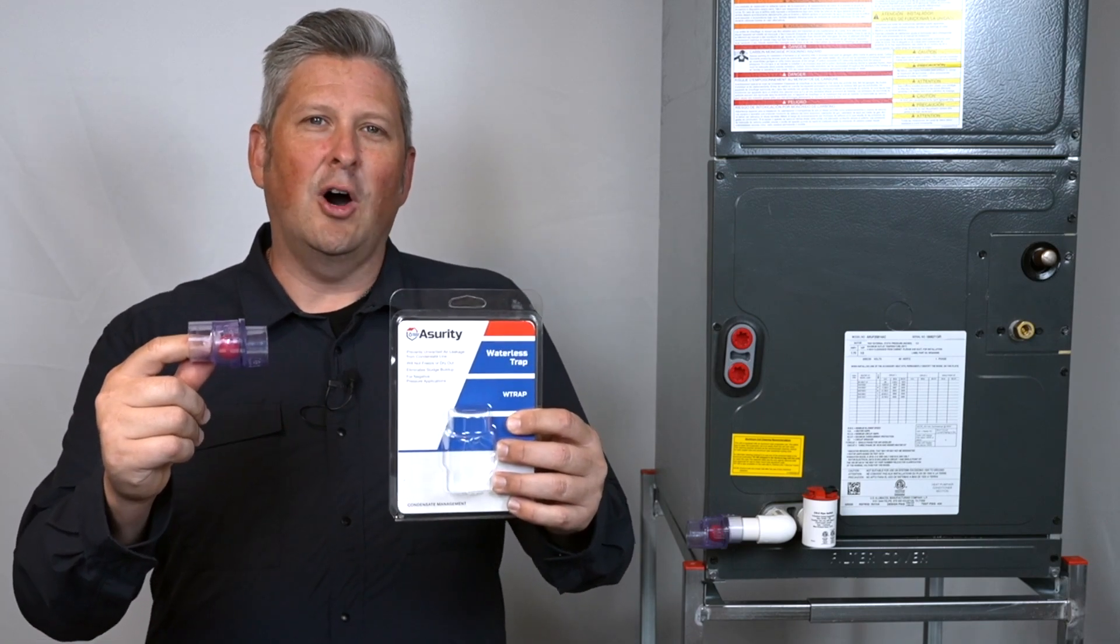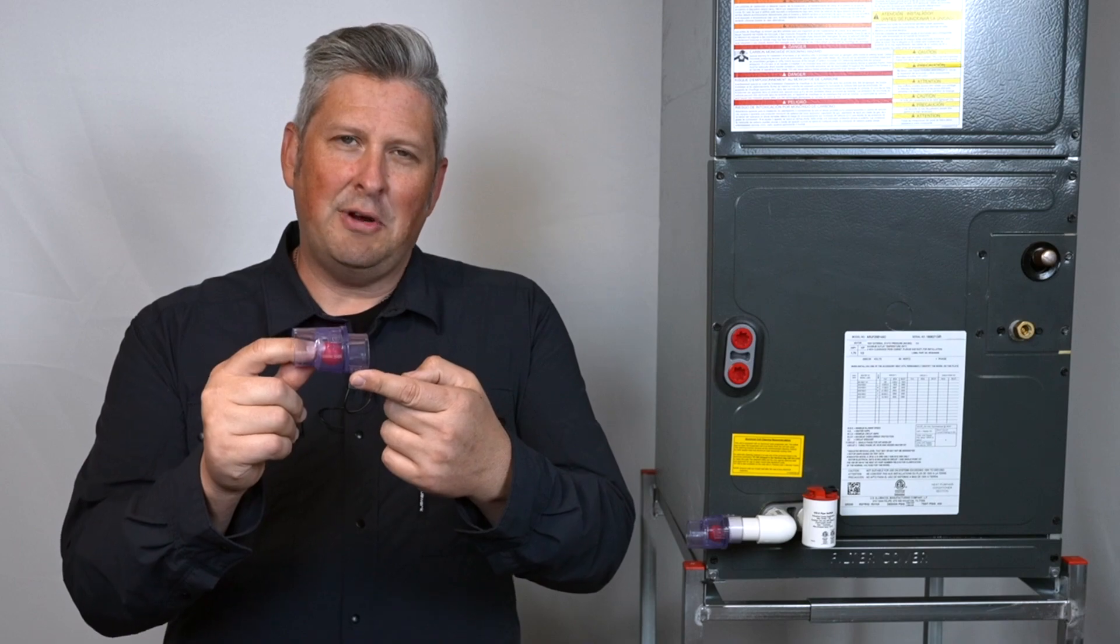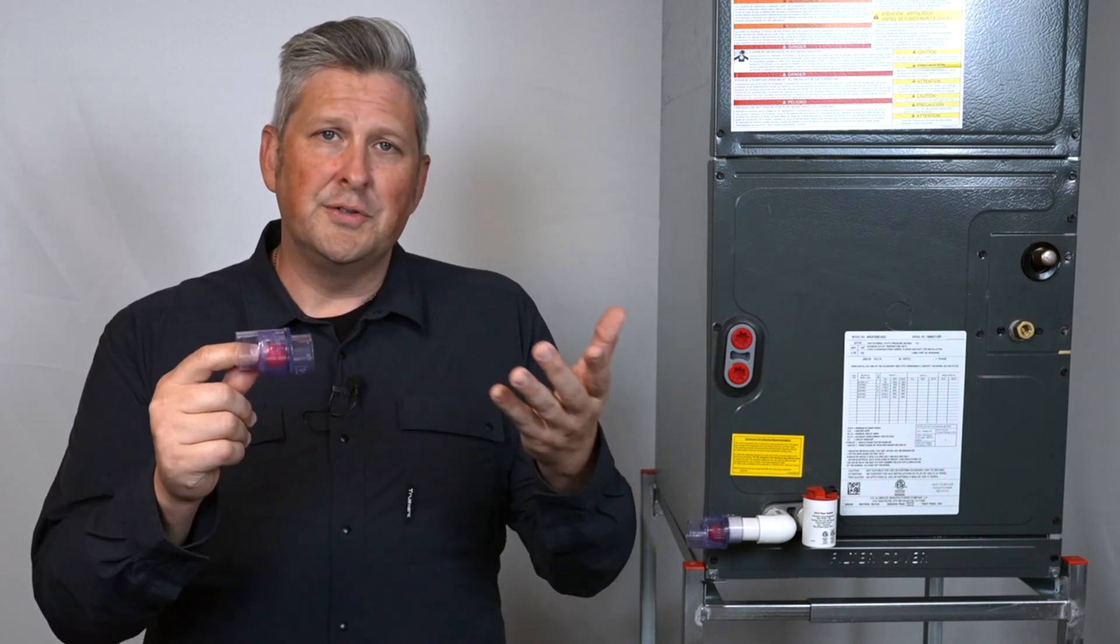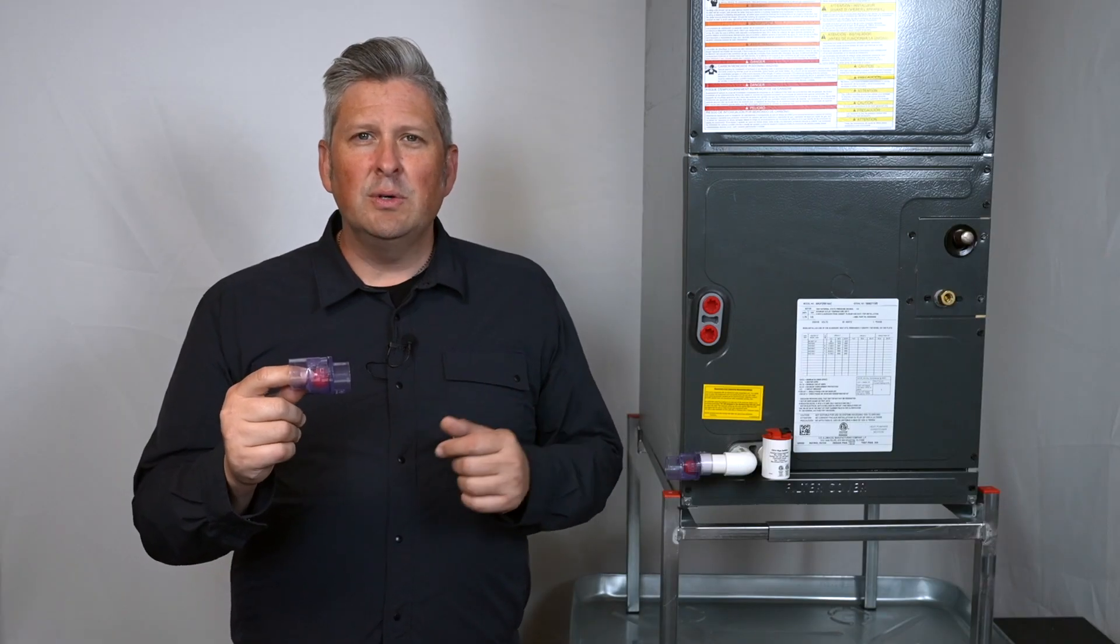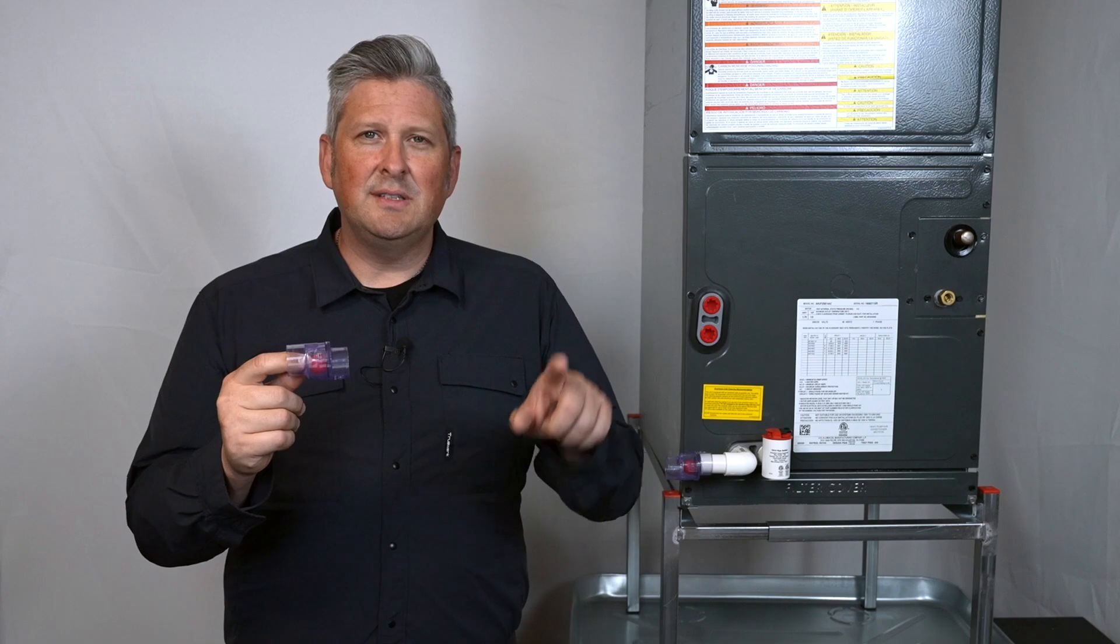The W-Trap addresses all of those issues. Because of its unique design, it reduces trap height by up to 60%. Because it doesn't hold water, there's no need to worry about it drying out. It won't freeze and break or develop odors over time. It also eliminates the geyser effect that can happen in traditional traps, where water is sucked out of the trap into the unit. Now, let's look at the W-Trap up close to see its design and how it works.